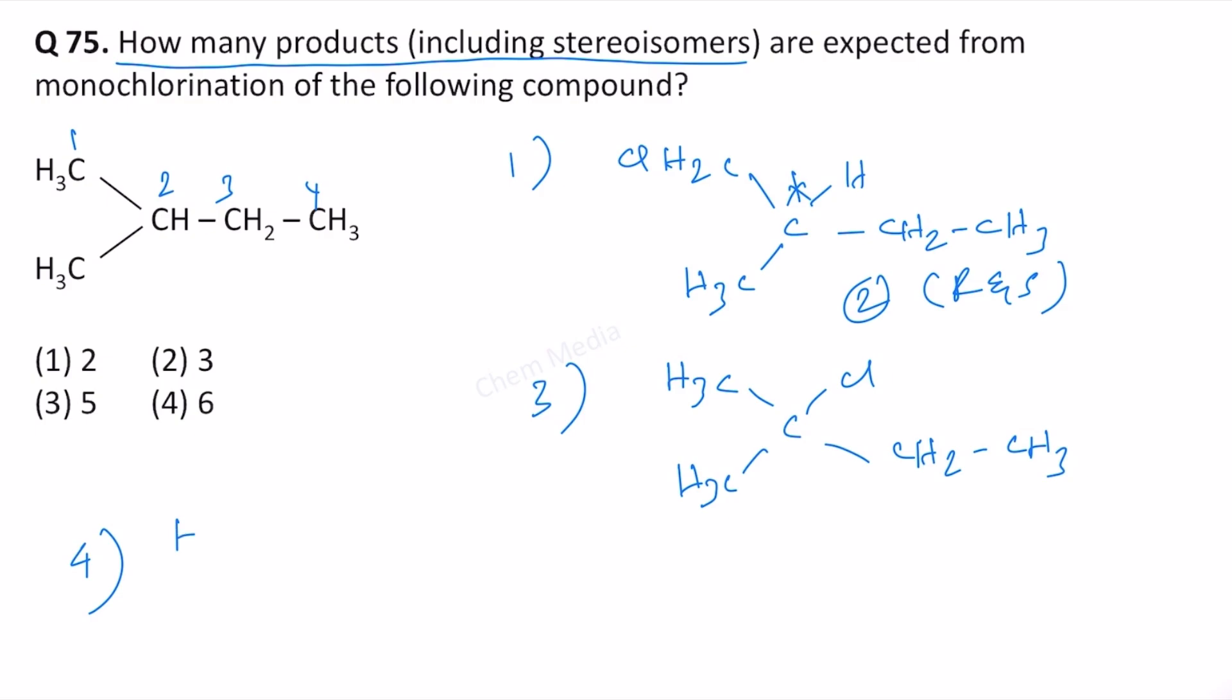If we do that then that carbon atom will become chiral once again because we will be having 4 different groups. So we should count it as 2 isomers, R and S are possible. So let's put it as 6 in that case.